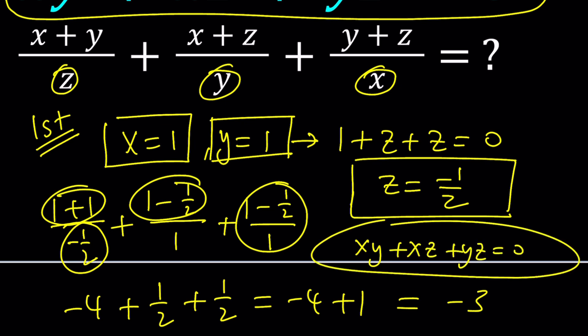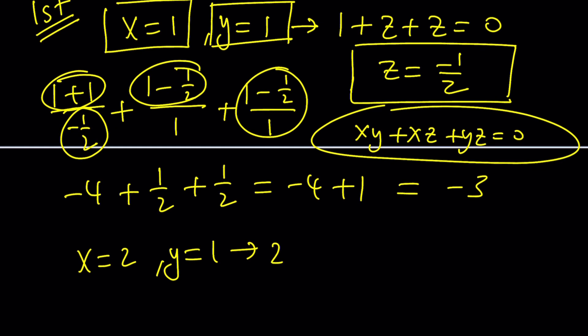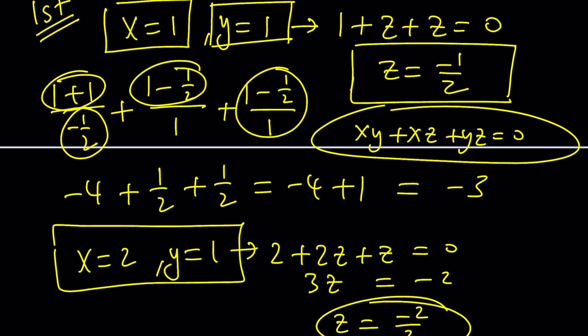With x equals 2 and y equals 1 we get 2 plus 2z plus z equals zero. From here 3z is negative 2, z is negative two thirds. So unfortunately one of the values as far as I know always have to be a fraction and that makes substitution a little harder but it's not too bad and you can go ahead and test these out.